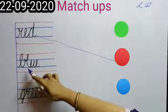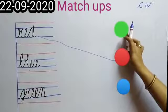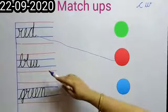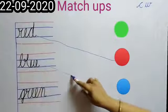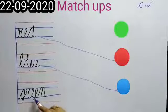B-L-U-E, blue. Is this blue color? No, this is red color. Then this is blue color. All of you match blue with blue color. Very good. Now read the spelling G-R-double E-N, green.